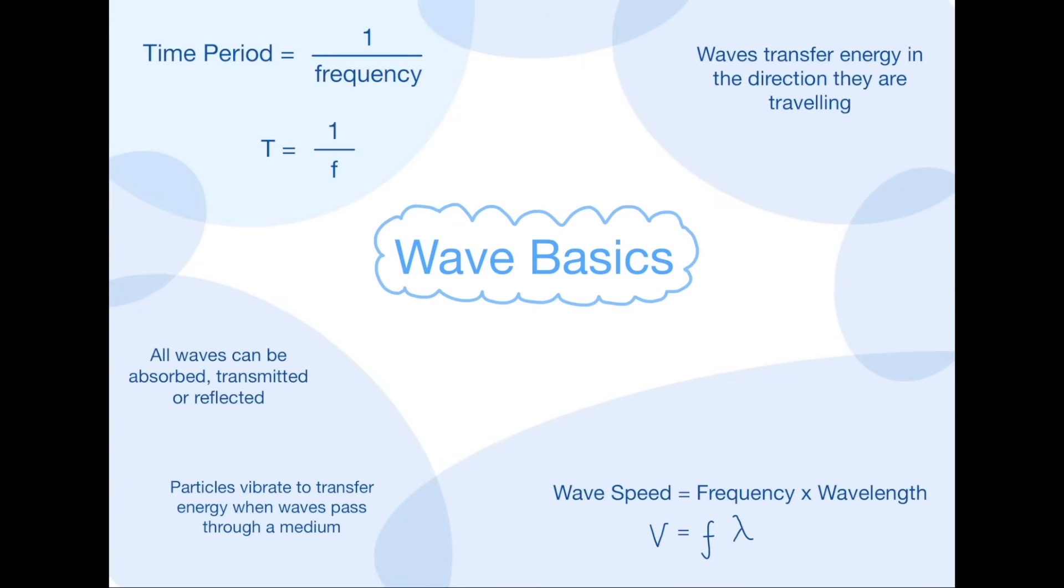A couple of equations that will be useful to remember: time period equals 1 over the frequency, so T = 1/f. And also, wave speed equals frequency times wavelength, so v = f × λ (lambda is the symbol for wavelength).